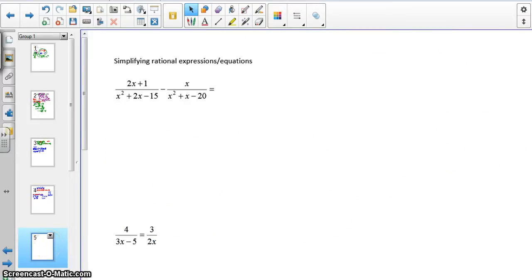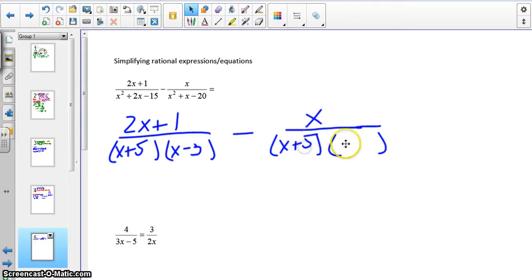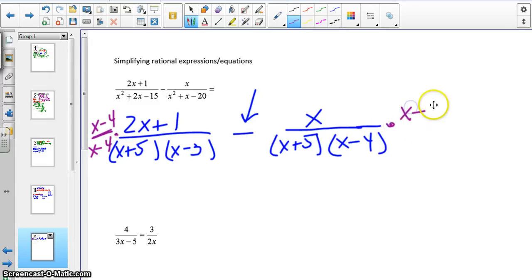This next part is about rational expressions and equations. And so this problem uses factoring. I'm going to go a little fast because I want to make sure I get in underneath my 15-minute time limit on this software that I'm using. So I would start out like this and I would factor. So here I'd have x plus 5 and x minus 3. And over here I'd have x plus 5 and x minus 4.